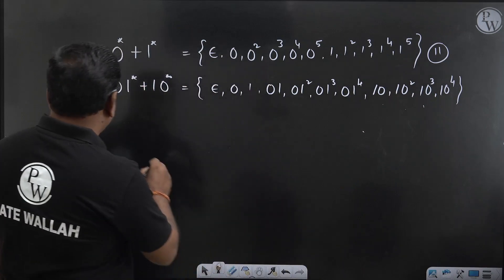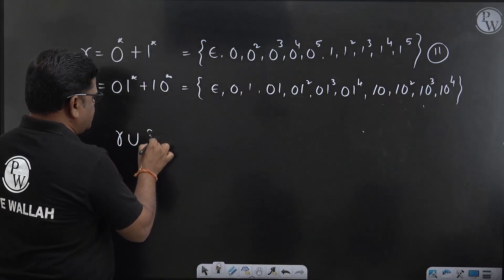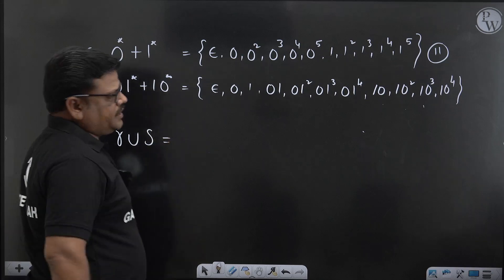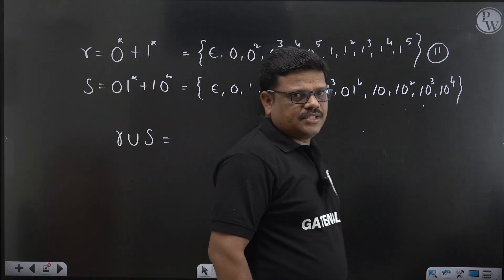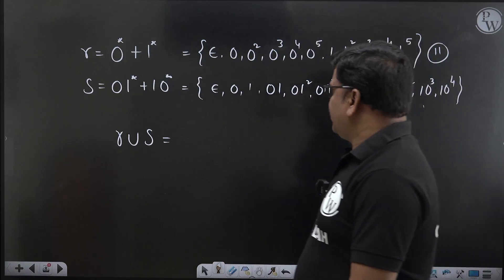Now what we have to do? R union S. Total how many strings are there in R union S? There are some repeated strings here, we need to eliminate those. What are the repeated strings?